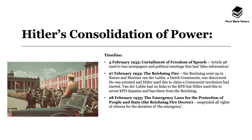On 4th February 1933, he curtailed freedom of speech by using Article 48 of the Weimar constitution to ban newspapers and political meetings that had what was classed as false information. Of course this label is so broad that it was very easy to exploit.